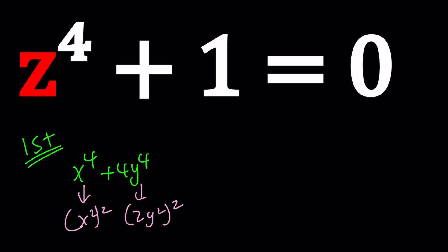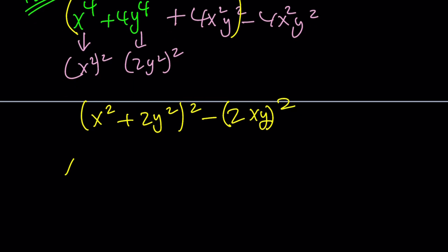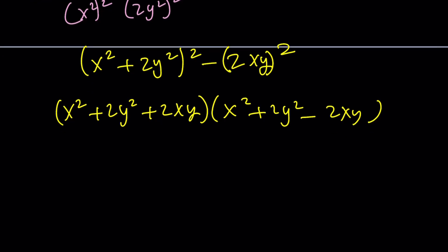When you have something like this, the term you need to add to both sides is 4x squared y squared, and then subtract it. This part becomes a perfect square: x squared plus 2y squared quantity squared. The difference is another perfect square, so you get difference of two squares, which is factorable as x squared plus 2y squared plus 2xy times x squared plus 2y squared minus 2xy. Such a nice way to factor it.